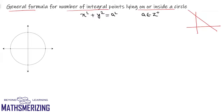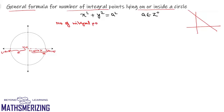First, I'll explore all the points with integral coordinates that lie on the x-axis which lie on or inside this given circle. The rightmost point is (a, 0) and the leftmost is (-a, 0). Starting from (1, 0) all the way up to (a, 0), these a points lie on or inside the circle. Similarly, from (-1, 0) to (-a, 0), another a points. Including the origin, the number of integral points on the x-axis which lie on or inside the circle is 2a + 1.